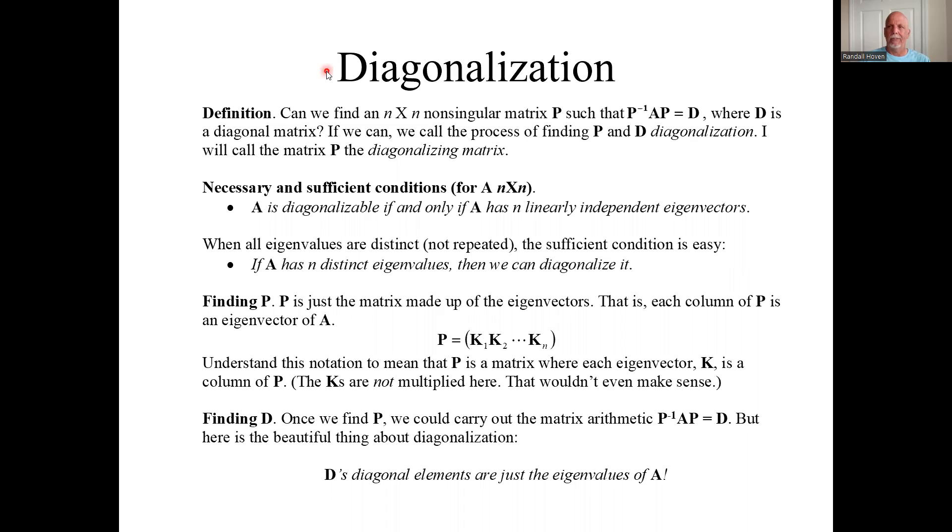We'll quickly talk about diagonalization, because all the hard work comes with the eigenvalue eigenvector problem. So it's easy to diagonalize if possible once we've covered all that stuff. What does it mean?